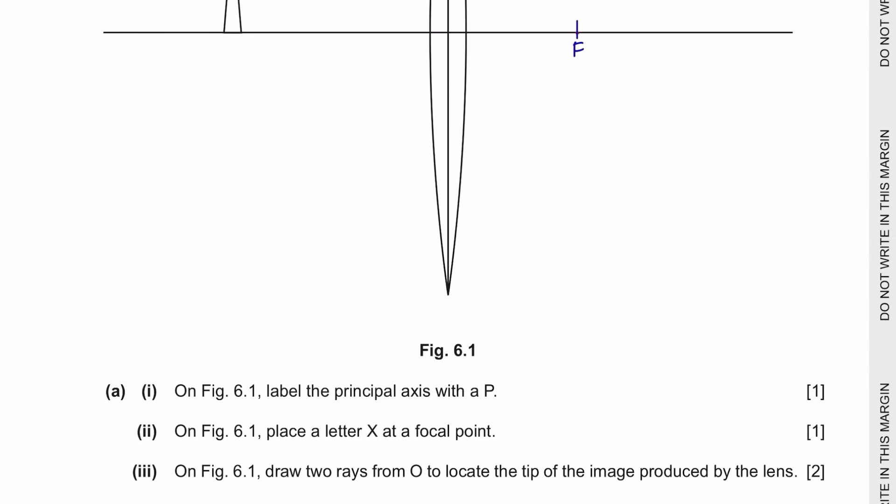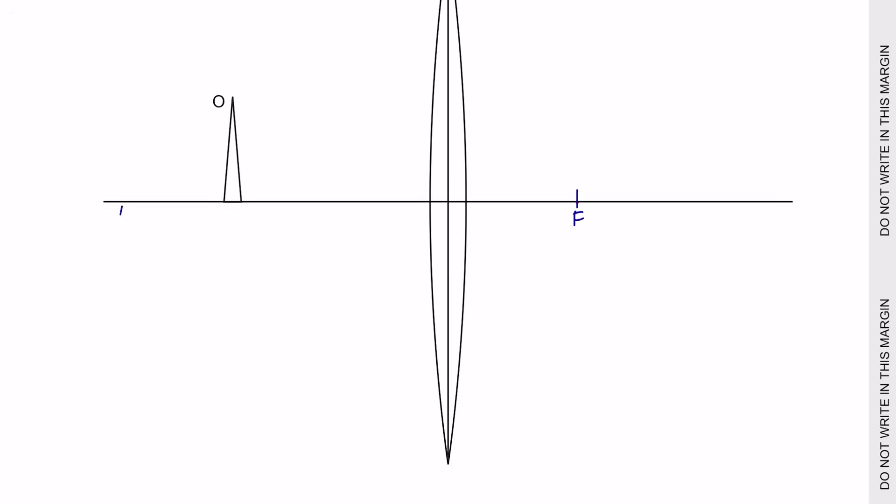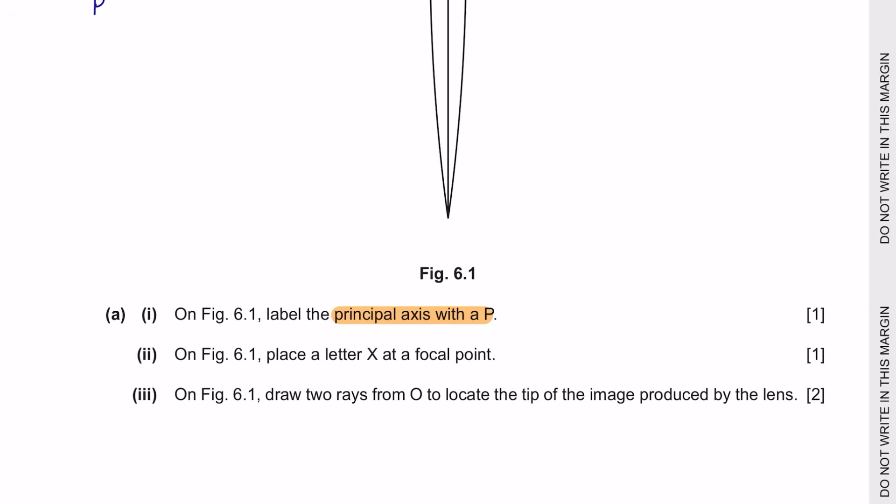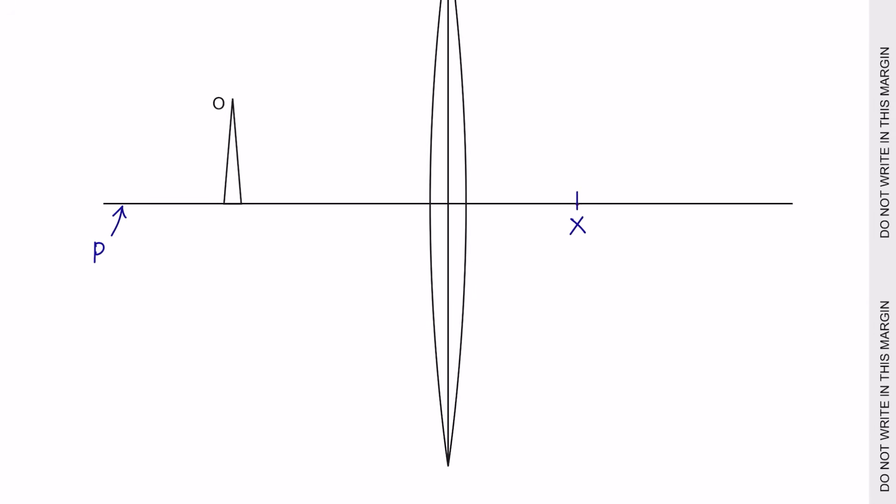Now focal length is the length between the center of the lens and the focal point. Question A part 1. On figure 5.6, label the principal axis with a P. So the long line we see here is your principal axis. And place the letter X at a focal point. So they want you to label it as X.